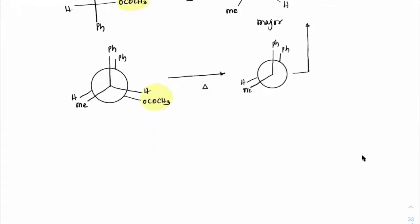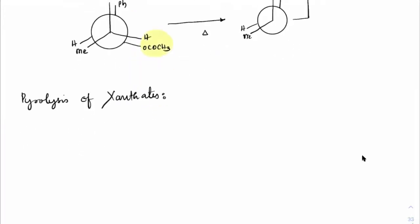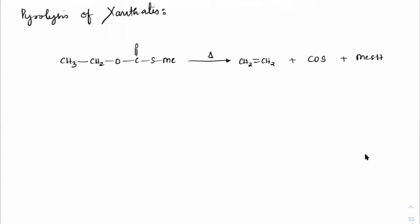We can also do pyrolysis of xanthates. A xanthate is: CH₃CH₂–O–C(=S)–S–Me. On heating, this gives CH₂=CH₂ plus COS plus MeSH. The same Ei mechanism applies: the cyclic transition state has oxygen, C=S, and S extracting the beta hydrogen, giving the alkene, and the unstable intermediate collapses to COS plus MeSH.